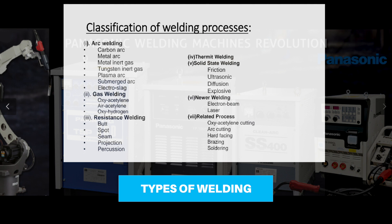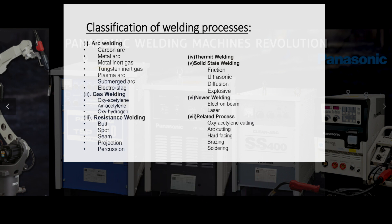Then there is plasma welding. Then there is submerged arc welding, which is a different process. It is called submerged because during welding, a wire is used and flux falls on it — that is why it is called submerged arc welding.